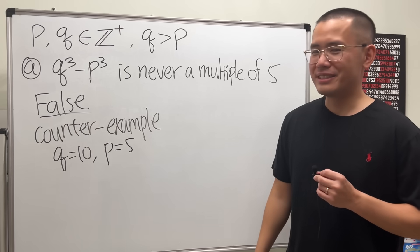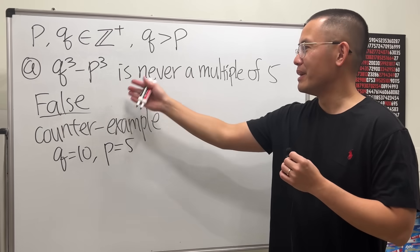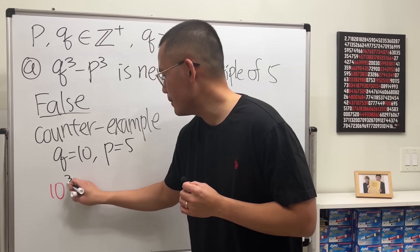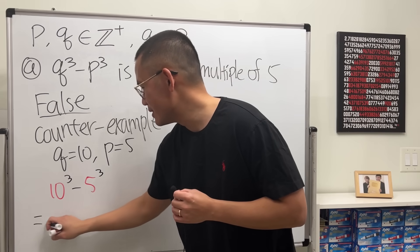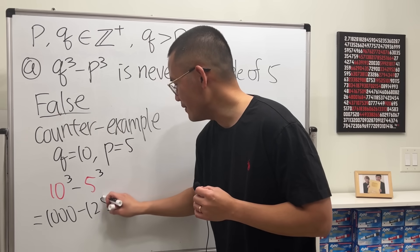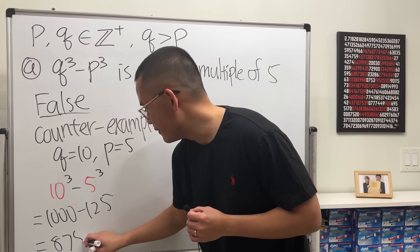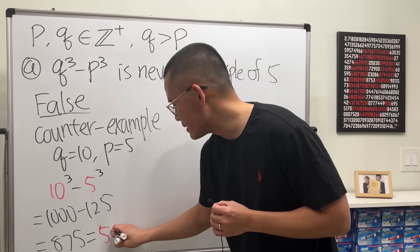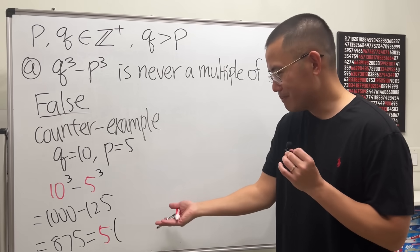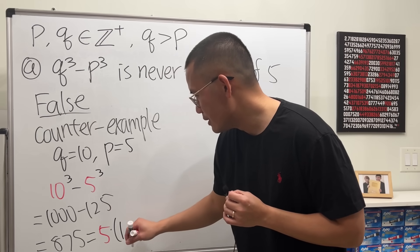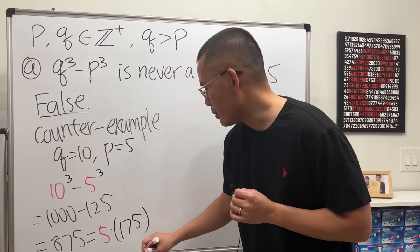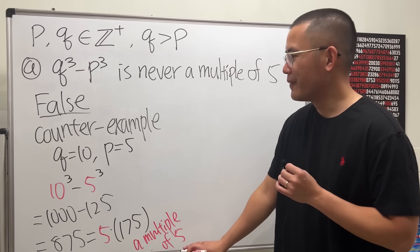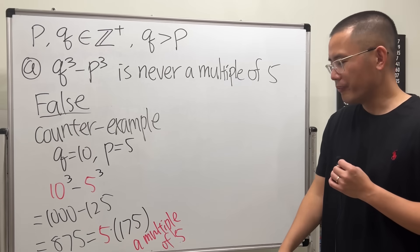When you provide a counter-example you should show it explicitly. So we get 10³ minus 5³, which is 1000 minus 125, equalling 875. To make it super clear, write it as 5 times 175, which is a multiple of five. So it's not 'never' — sometimes it is possible.